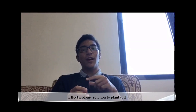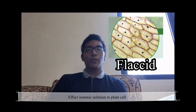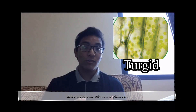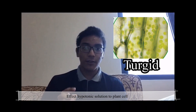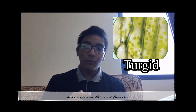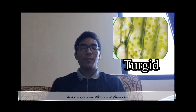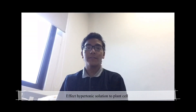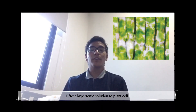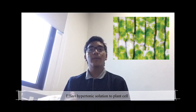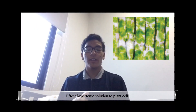When a plant cell is placed into an isotonic solution, the plant cell will become turgid because the plant cell and the extracellular solution are isotonic. When placed into a hypotonic solution, water will enter the vacuole of the plant cell by osmosis, causing the vacuole to expand and push against the cell wall. When placed into a hypertonic solution, water will leave the vacuole by osmosis, causing the vacuole to shrink and the plasma membrane to be pulled away from the cell wall.